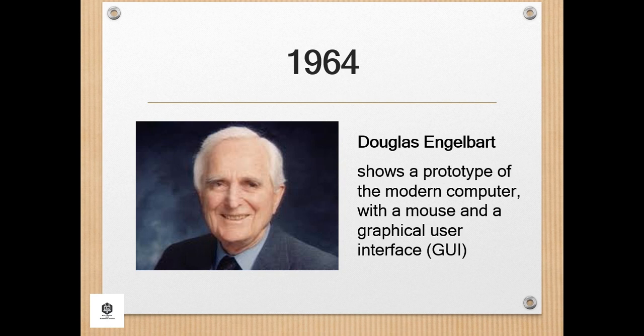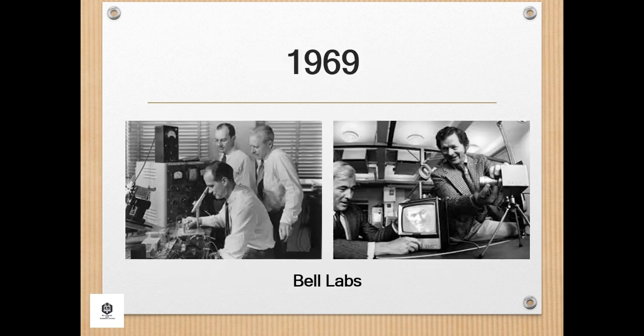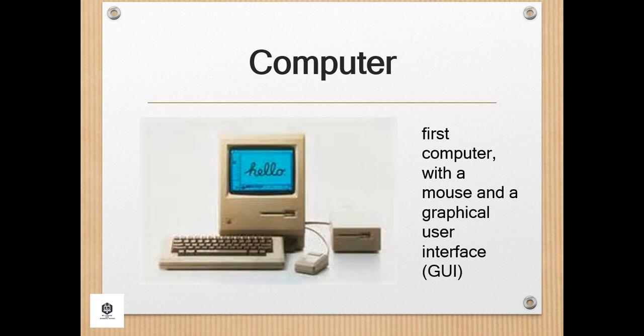During 1964, Douglas Engelbart showed a prototype of the modern computer with a mouse and a graphical user interface, or GUI. This marked the evolution of the computer from a specialized machine for scientists and mathematicians to technology more accessible to the general public. This is the first computer with a mouse and graphical user interface.